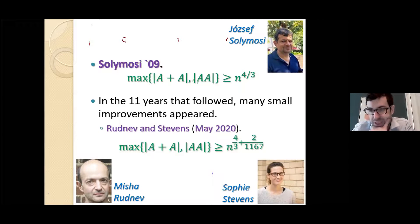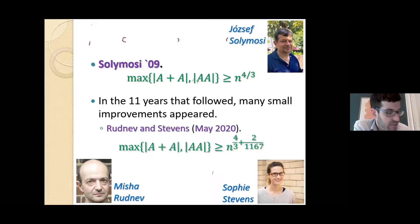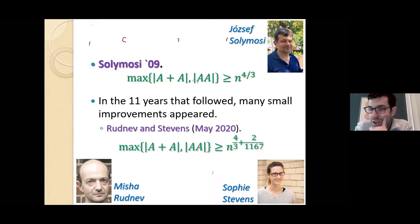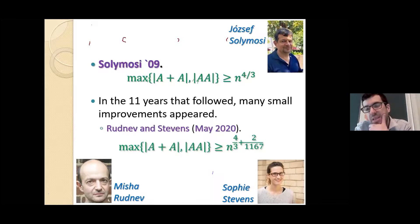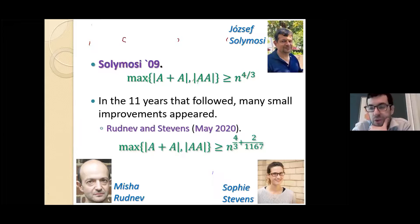I'm going to show you how Elekes made his breakthrough. It's not so hard to follow. Elekes's key move was shifting this from a number theory problem to a combinatorial geometry problem. To understand what he did, we need one new geometric object you probably haven't seen before, called an incidence.